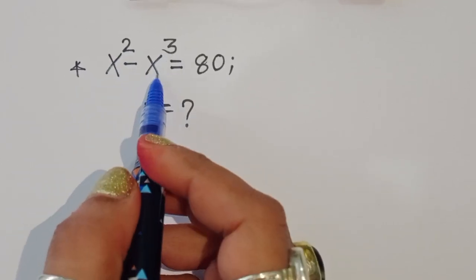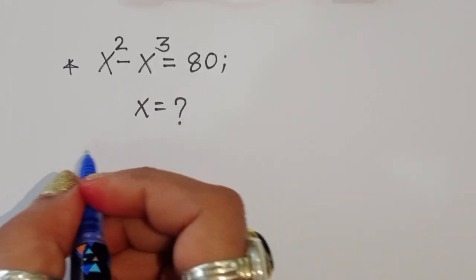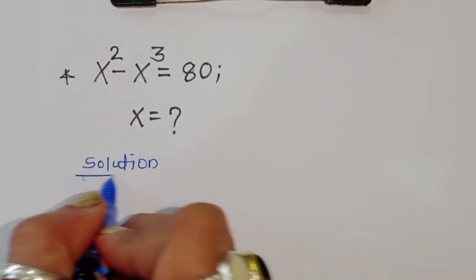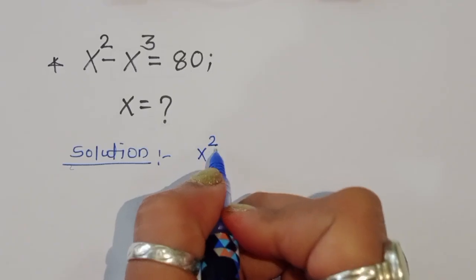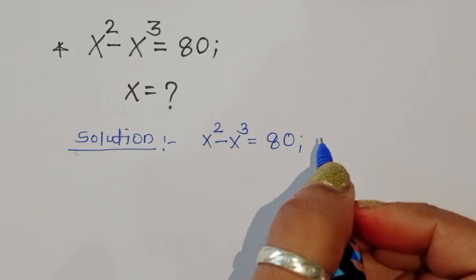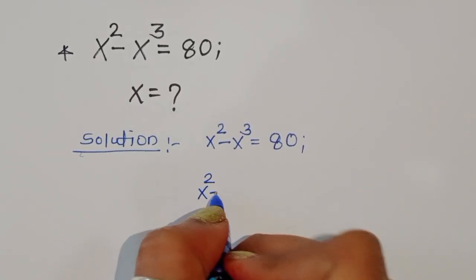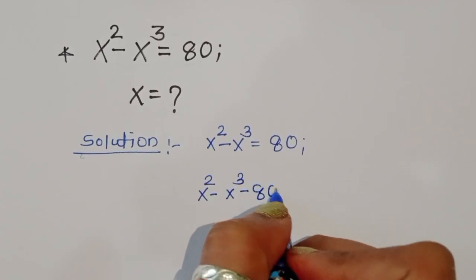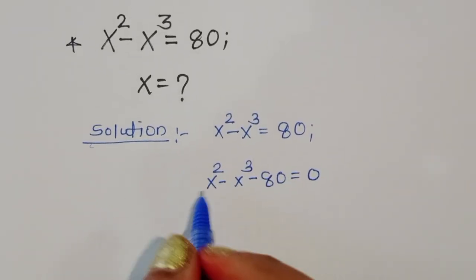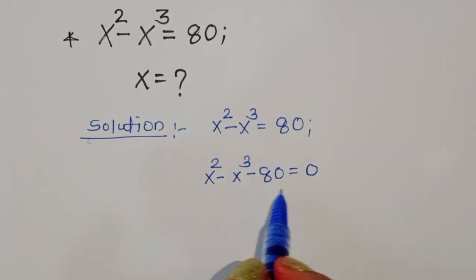Given x squared minus x cubed is equal to 80, we have to find out the value of x. Let's see the solution. We can write this as x squared minus x cubed minus 80 equals 0. Now x squared is a square form and x cubed is a cube form, so we have to convert 80 into square and cube form.